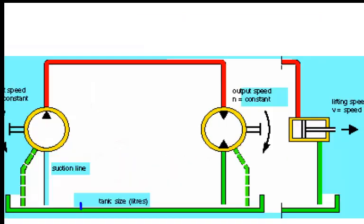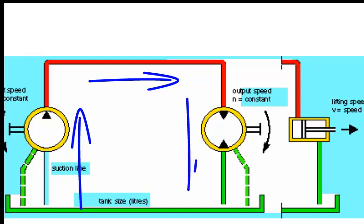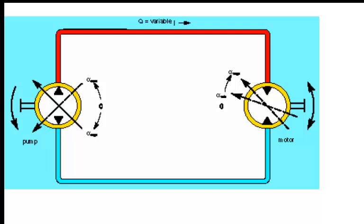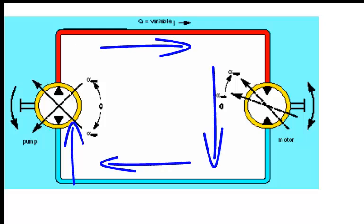In an open loop system, oil from the tank goes to the pump, it goes to the motor and it comes back to the tank. But in a closed loop system, oil from the pump goes to the motor and returns back to the pump. So it's a closed loop.